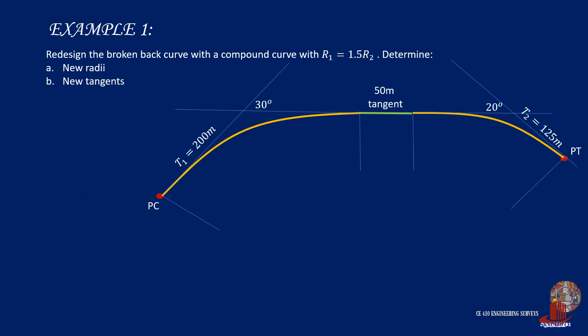Knowing the tangents, we can work on the curved distance by reflecting the tangents of each curve next to the short tangent. We are to replace the existing broken back to a compound curve. Adding the tangents, we get 375 meters, which is the actual curve necessarily covered by the compound curve.